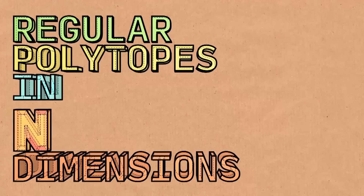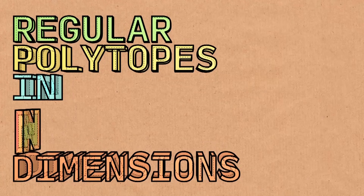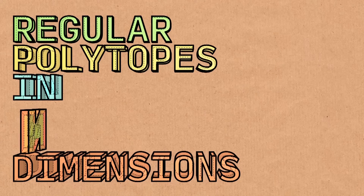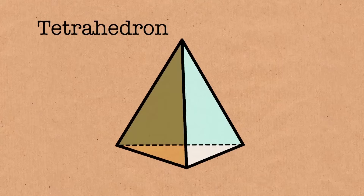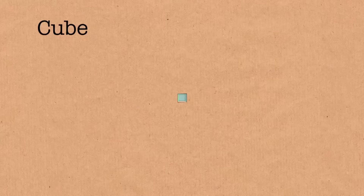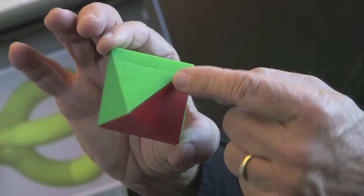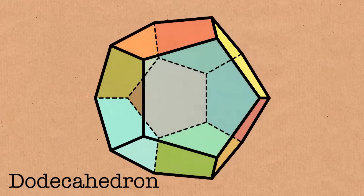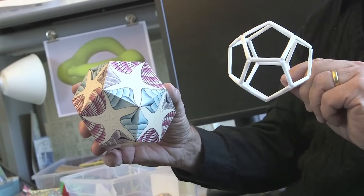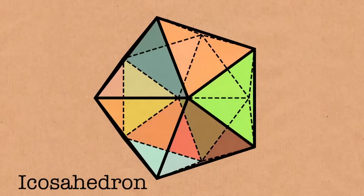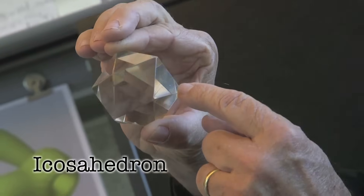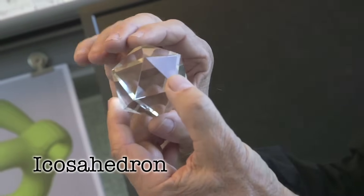A polytope is just a more general term that generalizes from two-dimensional polygons and three-dimensional polyhedra — everything higher we call a regular polytope. That sounds a little scary, so let's start with something much simpler: the platonic solid. Here is a tetrahedron — that's the first platonic solid. Next we have a simple cube. Third one, octahedron, made from eight equilateral triangles. Number four, 12 faces, the dodecahedron — this one has 12 pentagons. And finally, a real jewel, the icosahedron, made out of 20 equilateral triangles. And this is probably a Swiss crystal.